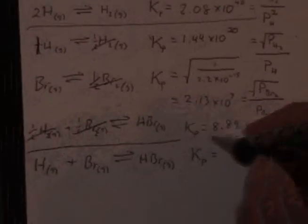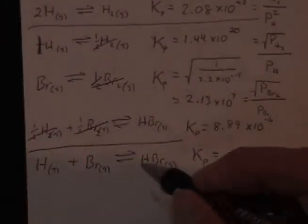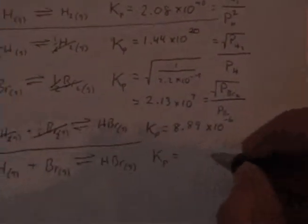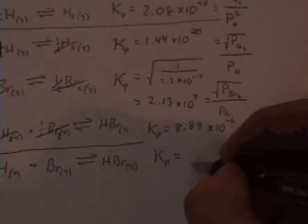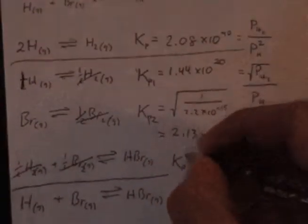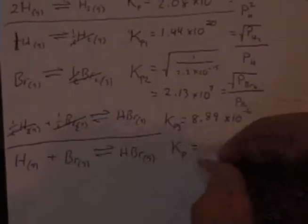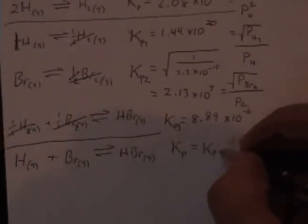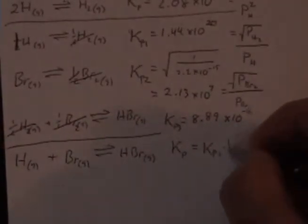And what I have here is, I'm going to call this P1, P2, and P3. My final K is going to be the product of these three.